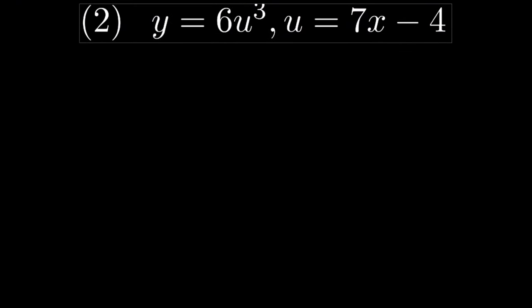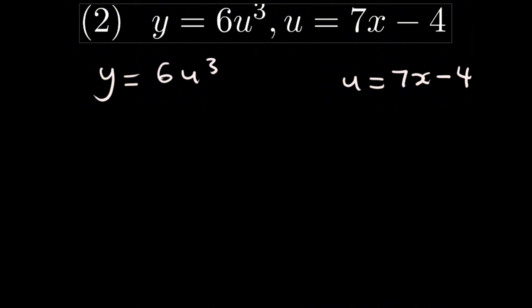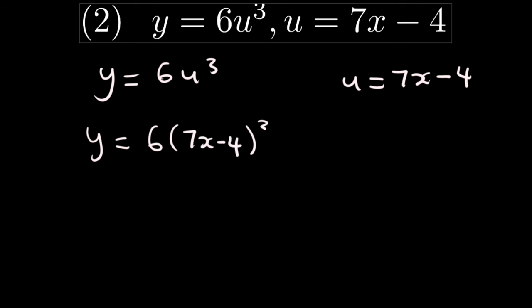For question two, it's just like the previous one. So y is f of u, and u is given as 7x minus 4. We have to put u in the place of u in y. So we have y equals 6 times (7x minus 4) cubed.